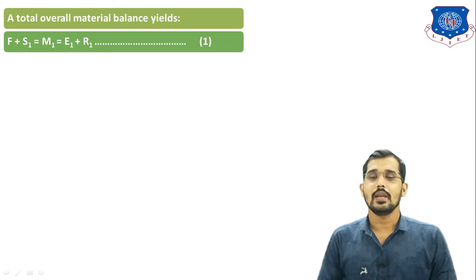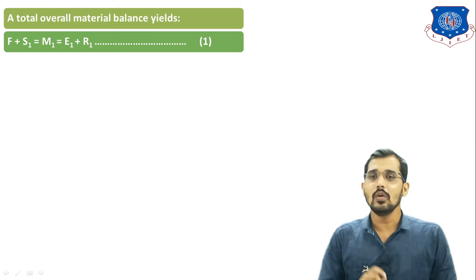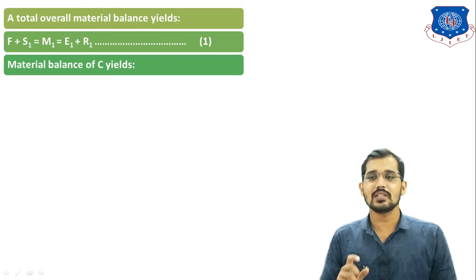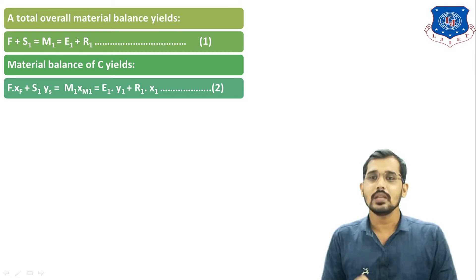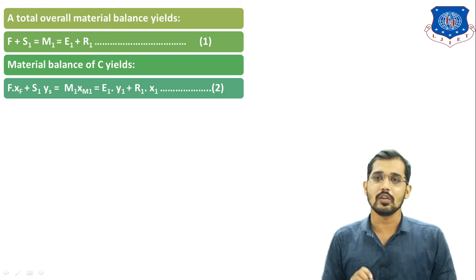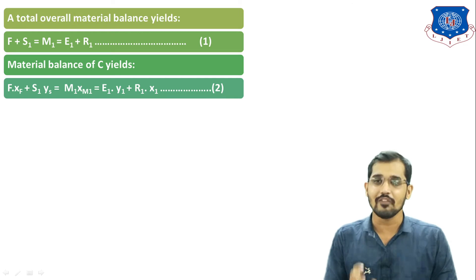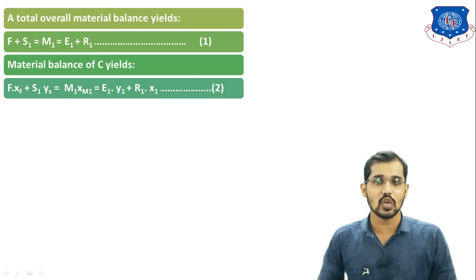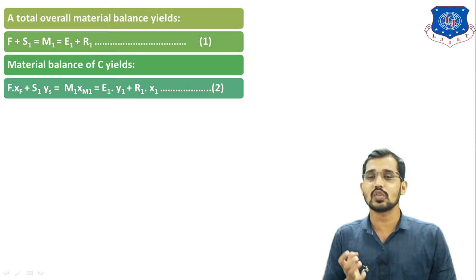Now the material balance for component C — the solute we want to extract — is: F·XF + S1·YS = M1·XM1 = E1·Y1 + R1·X1. Here, XF is the solute concentration (weight fraction of C) in the feed solution, YS is the mass fraction of solute in the extracting solvent (initially YS = 0 since the solvent is pure), M1 is the total mixture mass, XM1 is the weight fraction of solute in the mixture, E1 is the mass of extract phase, Y1 is the weight fraction of solute in the extract, R1 is the mass of raffinate, and X1 is the weight fraction of solute in the raffinate.